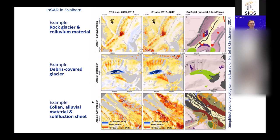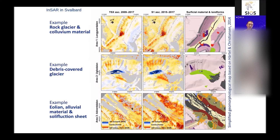The lower example shows alluvial material in Adventdalen valley with little topography. There is some solifluction on the hillsides, but the main signal — shown in red — is subsidence due to thawing of the active layer. As ice content in the active layer melts in summer, the terrain subsides by several centimeters. The scale here is plus or minus five centimeters, so the whole terrain is more or less subsiding by five centimeters — a quite significant change of the landscape occurring in Svalbard during summer. In fall, there is an uplift part when freezing occurs.